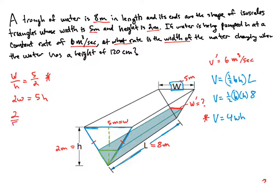So we're going to get two fifths W is equal to H. So I'm going to make that substitution right here. Okay. So we end up with V is equal to 4W times two fifths W. Multiplying that together, I'm going to get eight fifths W squared.